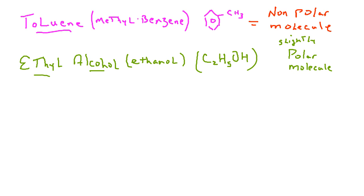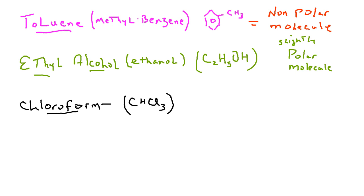Finally, we'll talk about chloroform. If you've watched enough movies, you know chloroform — they put it on a handkerchief and someone passes out. It was used as an anesthesia, though in reality it would take five to ten minutes of breathing it in. Chloroform is CHCl₃ — carbon makes four bonds, so there's one carbon, one hydrogen, and three chlorines. Chloroform is a polar molecule.